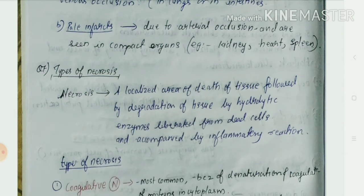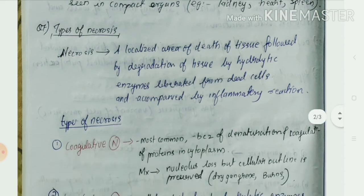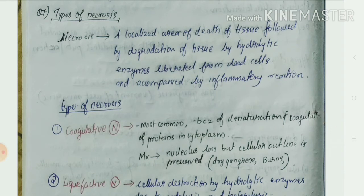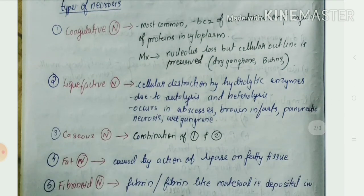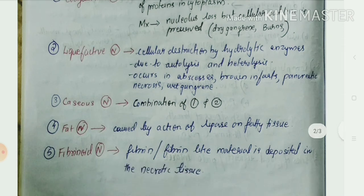Other questions cover types of necrosis. Necrosis is a localized area of death of tissue followed by degradation by hydrolytic enzymes liberated from dead cells and accompanied by an inflammatory reaction. The five types of necrosis are: coagulative necrosis, liquefactive necrosis, caseous necrosis, fat necrosis, and fibrinoid necrosis.